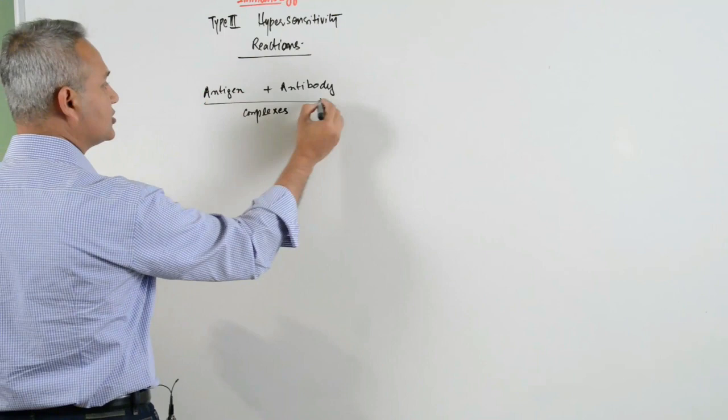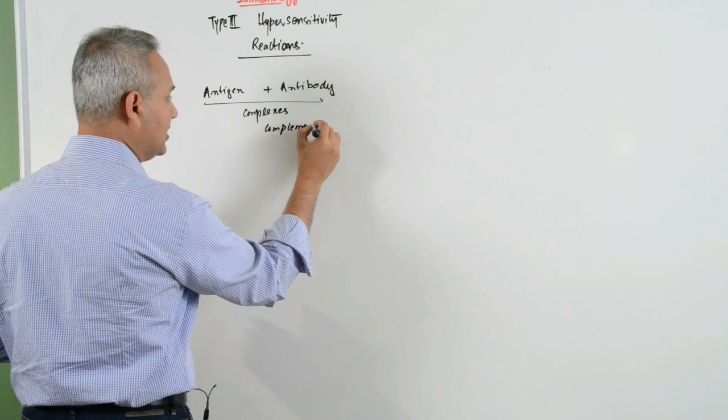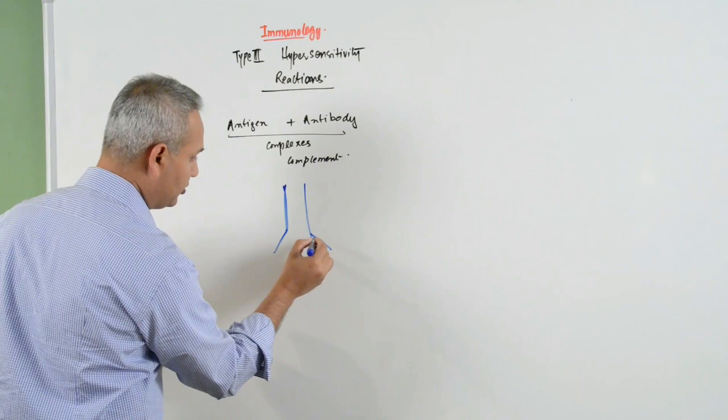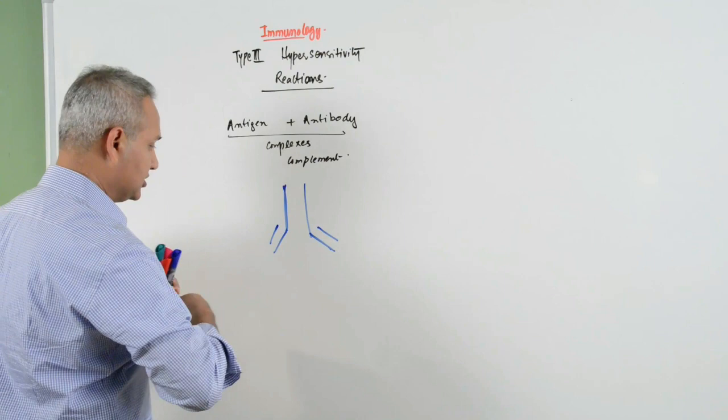What is the third thing? Once these complexes form, then the complement will become activated as well. Normally you can actually say that if this is the antibody, this is an immunoglobulin.